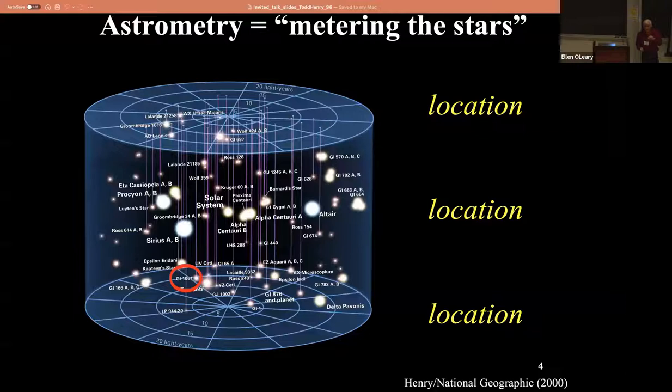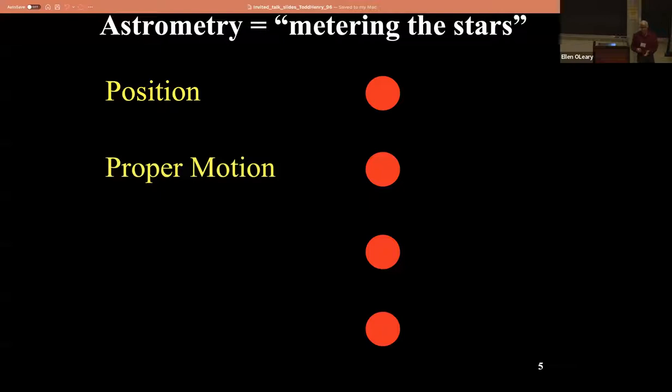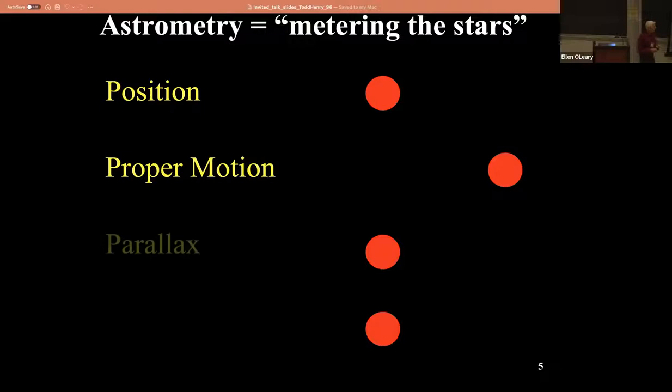There are a bunch of different motions astrometrically that you need to think about. The first one is position - that's just where the dot is. Then you have proper motion, which is just a slide across the sky. There's also parallax, which makes an ellipse in the sky for the dot - not because the dot itself is moving, but because you're on a planet going around the sun. As you go around the sun, you get that reflex motion reflected in the sky, and that gives you an ellipse.